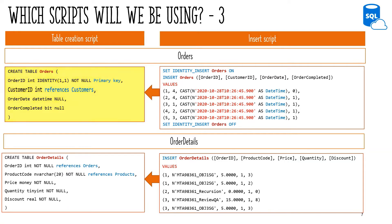With the Order Details insert, it ensures each order details row is linked to a valid order and only products existing in the Products table can be ordered.